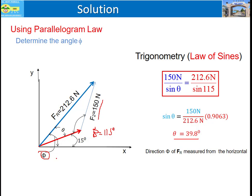The angle phi is the angle from the horizontal x-axis up to the resultant vector FR. This can be calculated as the summation of 15 degrees plus theta. Since theta is 39.8 degrees, phi equals 39.8 plus 15 degrees, which equals 54.8 degrees. This is the direction of the resultant.